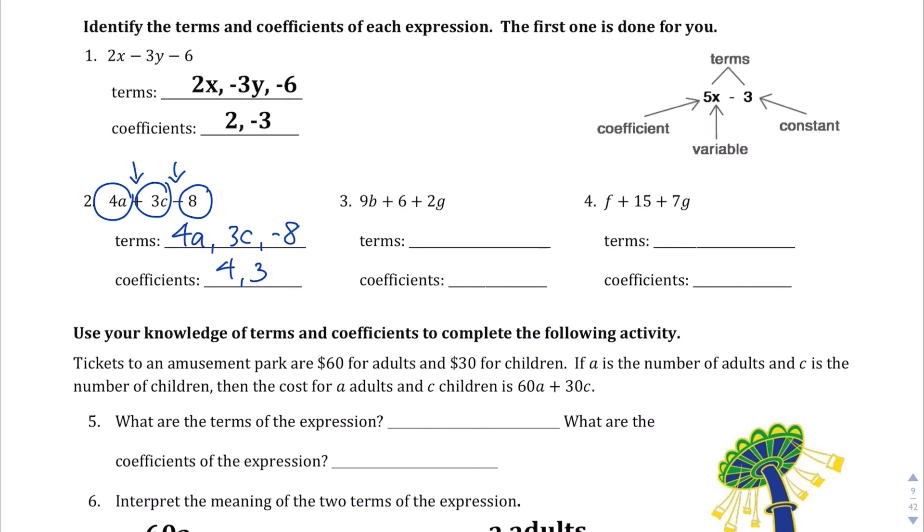Question number 3. Again, three terms, right? They're separated by this plus sign and this plus sign. So our terms are 9b, 6, and 2g. So let me write that: 9b, 6, 2g. And we have two coefficients here because we have two variables, b and g. So our coefficients are 9 and 2.